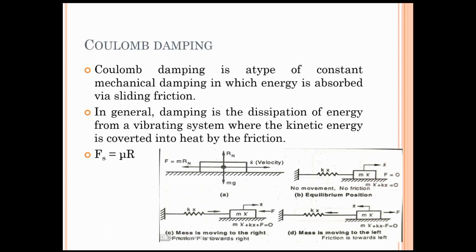The friction force is equal to μRn, where μ is the friction coefficient and Rn is the normal reaction. In the figure, we have a body moving on a surface. The body has weight Mg acting vertically downward, and normal reaction Rn acting vertically upward. As the body moves to the right, a motion-opposing frictional force F = μRn acts to the left.